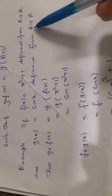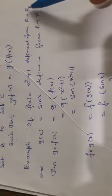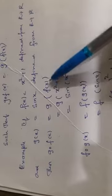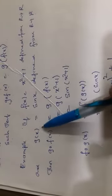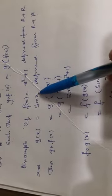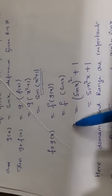It is possible to find g composite f of x because f is defined from R to R and g is defined from R to R. The codomain of f and the domain of g are the same, so g composite f of x equals g of f of x. Since f of x is x squared plus one, this becomes g of x squared plus one. Since g of x is sin x, replacing x with x squared plus one gives g of x squared plus one equals sin of x squared plus one.